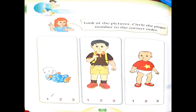The baby is number one. Next, number two: we have a little kid and a little boy. The little kid is smaller than the boy, so the little kid is number two and the boy will be number three.